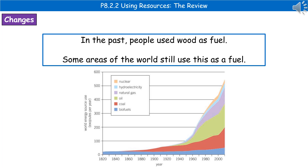Coming to more recent times, you can see things like nuclear and hydroelectricity have seen a big increase. That's going to be down to increased populations and increased use of devices, leading to increased demands on electricity.